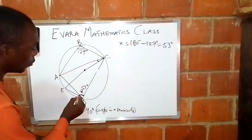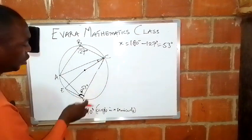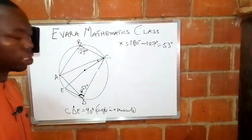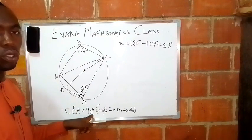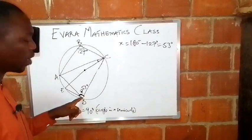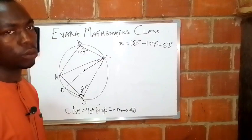it means the whole of this angle, that is angle CDE, will give us 90 degrees. Angle CDE equals 90 degrees because we have angle in a semicircle. That is another theorem.